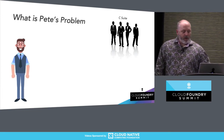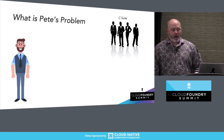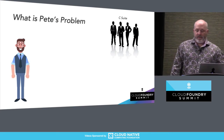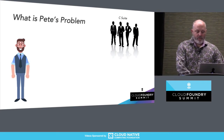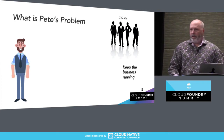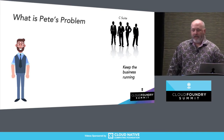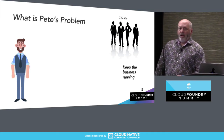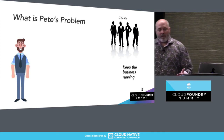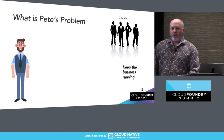So what is Pete's problem? His problem is that the C-suite understands that we need to do some modernization. We need to be able to stay consistent and keep up with the competition. We have some problems — we can't get software out the door quickly.